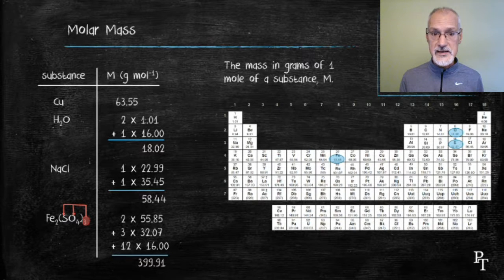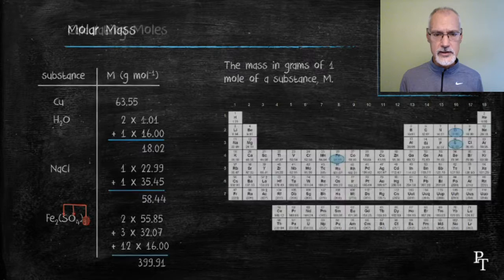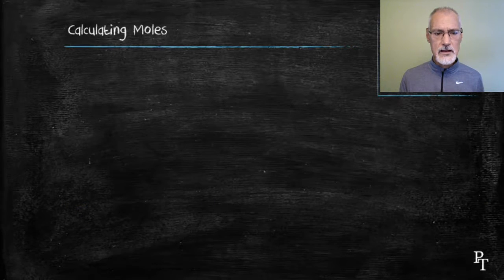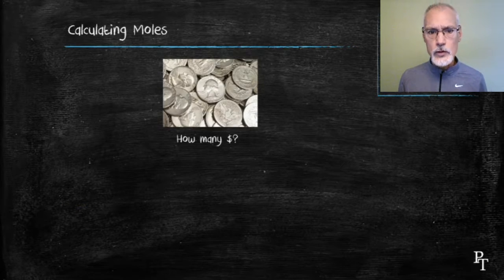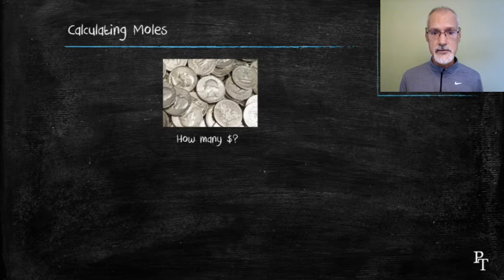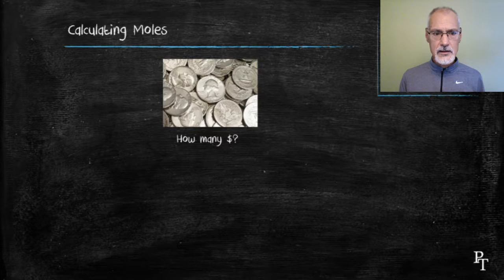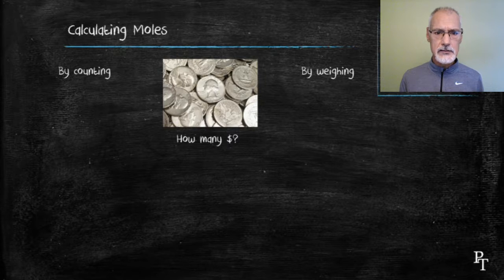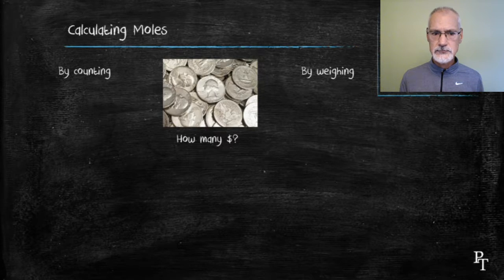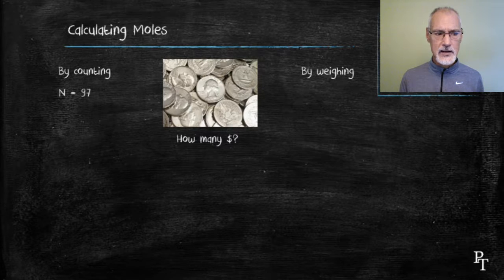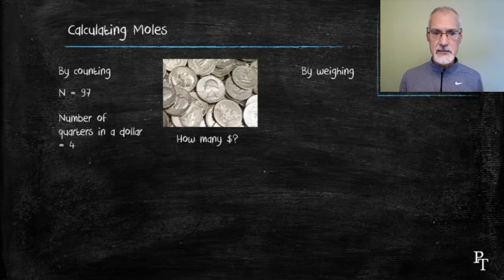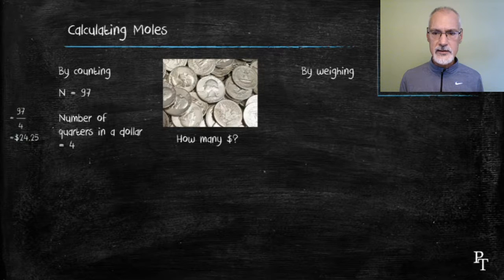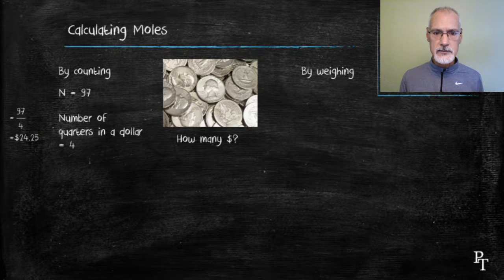Now I'm going to put the ideas together by looking at an analogy. Consider you have some quarters. And you're asking yourself how many dollars of quarters are present. You could obtain it two ways. One way would be by counting, another by weighing. So, I count out the quarters. There's 97 of them. I know that there are 4 quarters present in every dollar. So I simply perform the following math. 97 divided by 4. And I get 24.25 dollars.